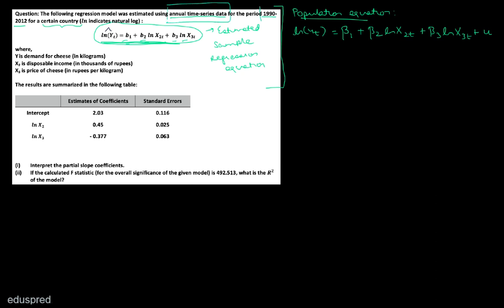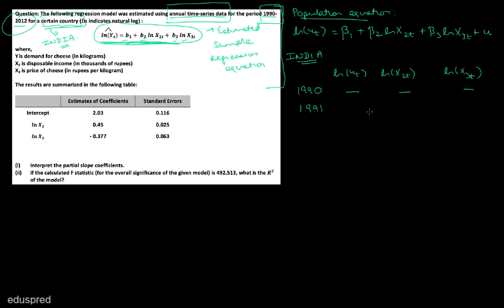Now, the data is annual time series data for this period for a certain country. Let's say that country is India. This means we have data on India on three variables: log of Yt, log of X2t, and log of X3t, for the period 1990 through 2012, giving values for each year. This is the essence of annual time series data.